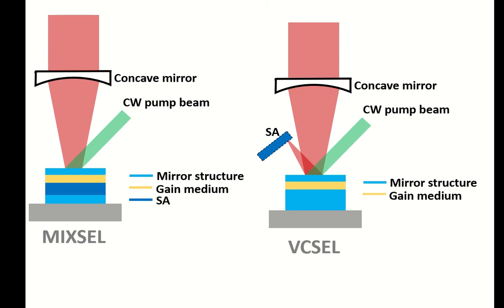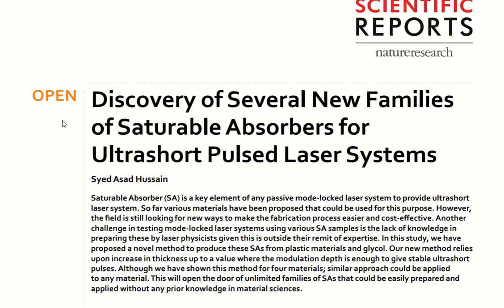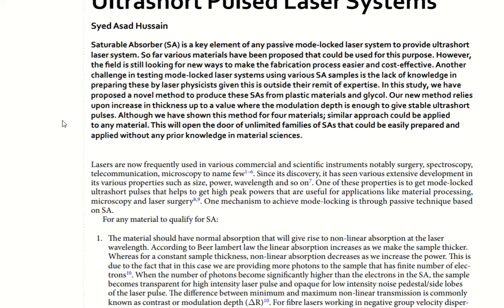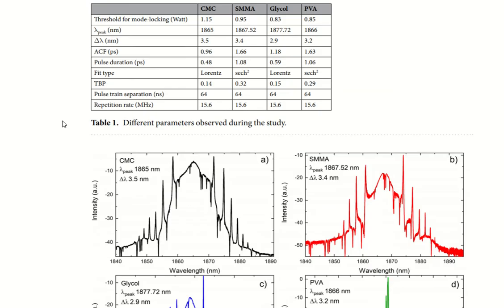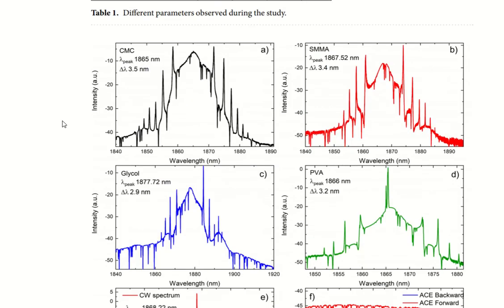For example, long cavity normally has a repetition rate of the pulses of the order of megahertz, whereas short laser cavities can give you gigahertz repetition rate. So what are the properties of the laser that are important to measure? This is a paper that I want to discuss with you.